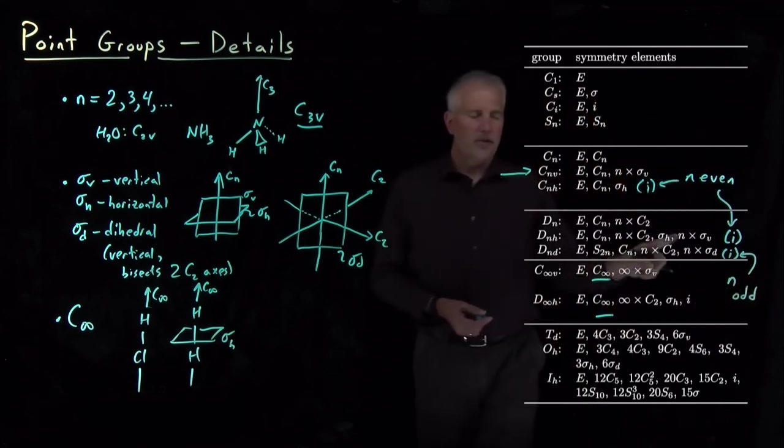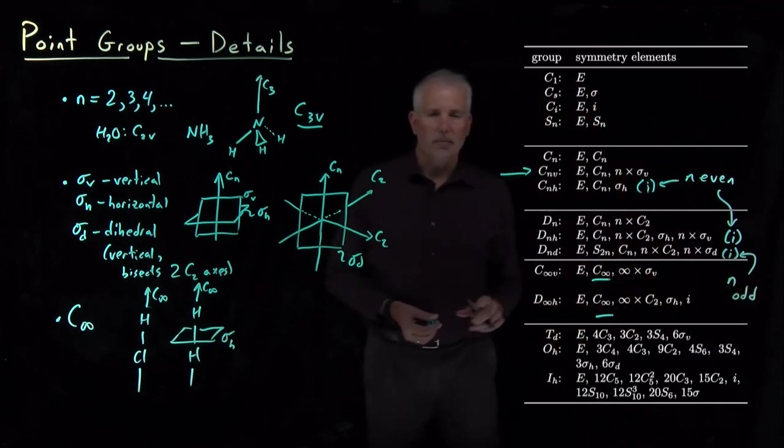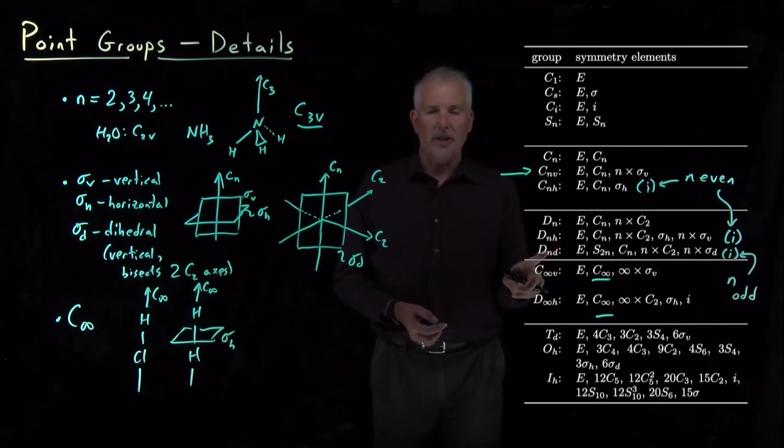It has an inversion center if N happens to be an odd number. So D3D, for example, would have an inversion center, but D4D would not.